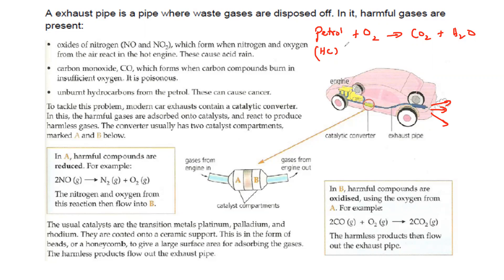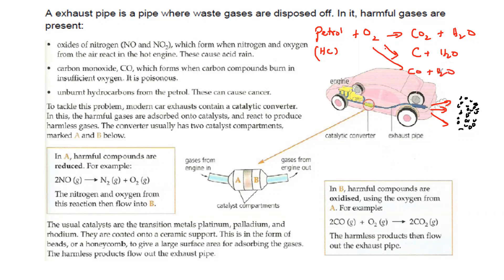The harmful effect is that when a car engine is burning petrol, sometimes the combustion is not complete. Some cars, especially very old ones whose engine efficiency has reduced, give out black smoke. The reason for the black smoke is that incomplete combustion produces carbon or carbon monoxide and water. Carbon and carbon monoxide are harmful for the atmosphere and the environment.